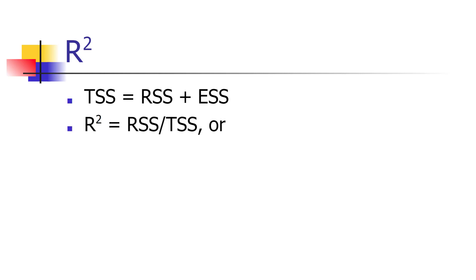We define R-squared to be the ratio of the regression sum of squares to the total sum of squares, or equivalently 1 minus the ratio of the error sum of squares to the total sum of squares.